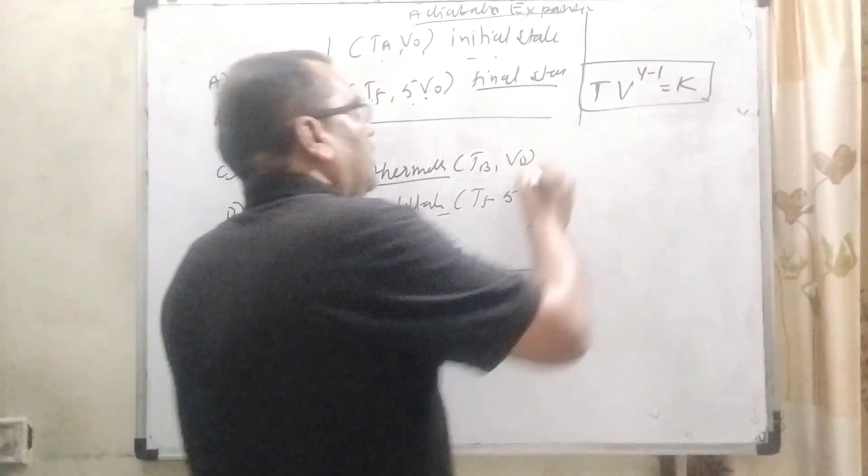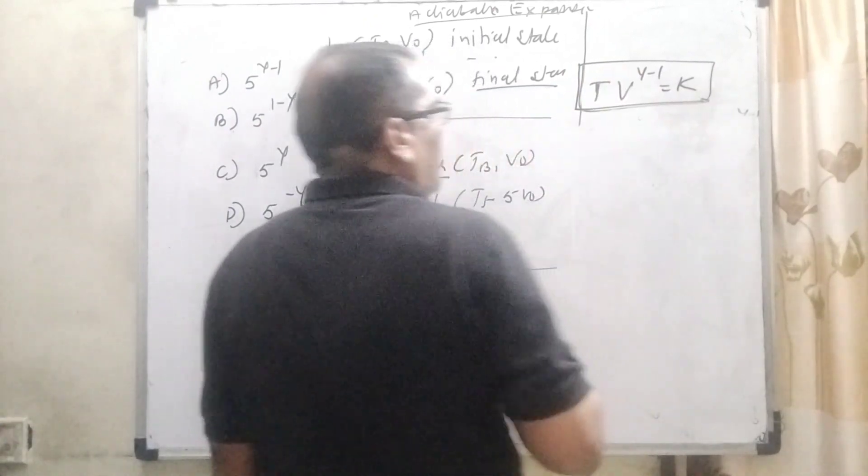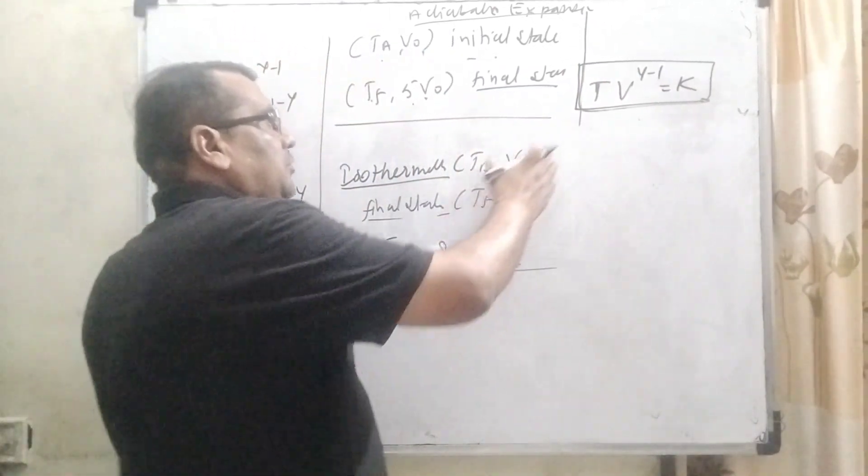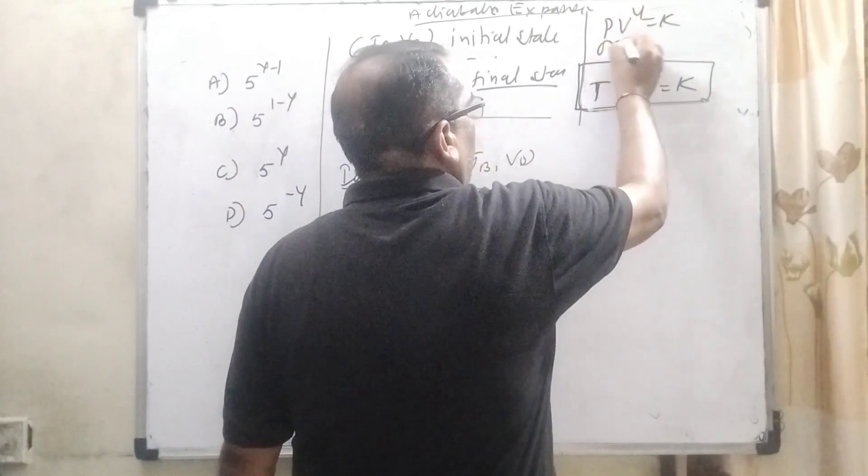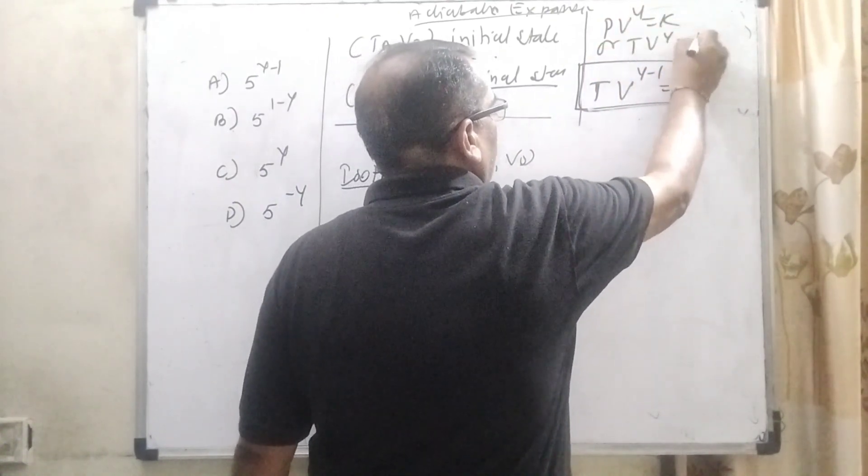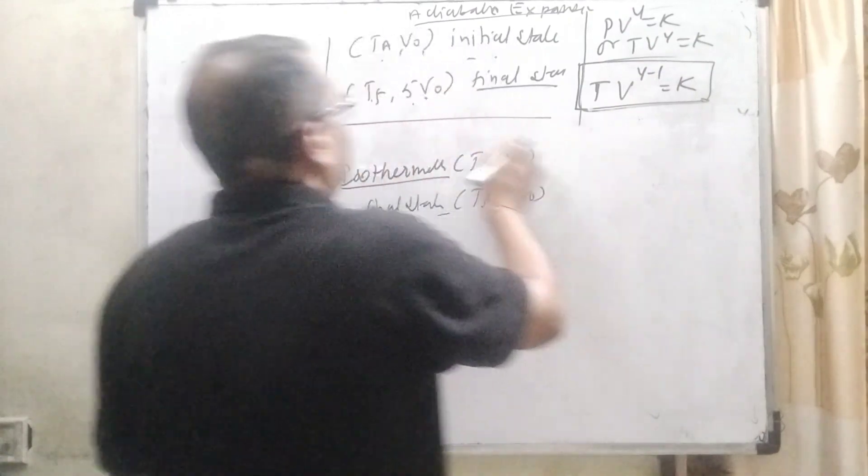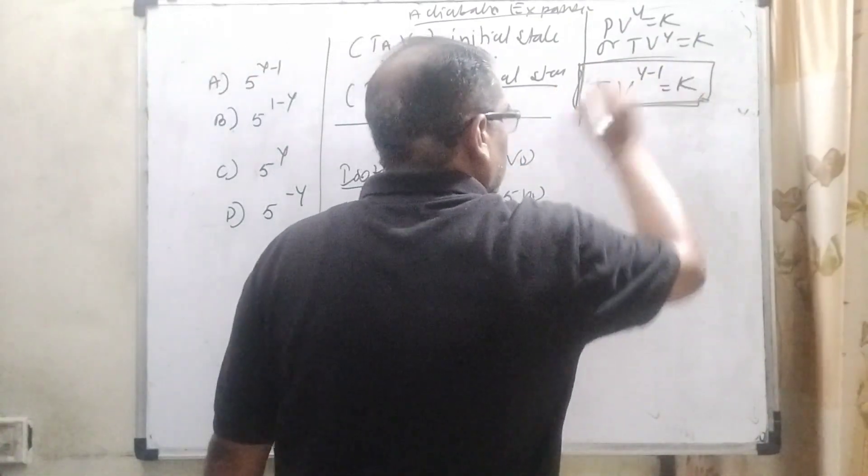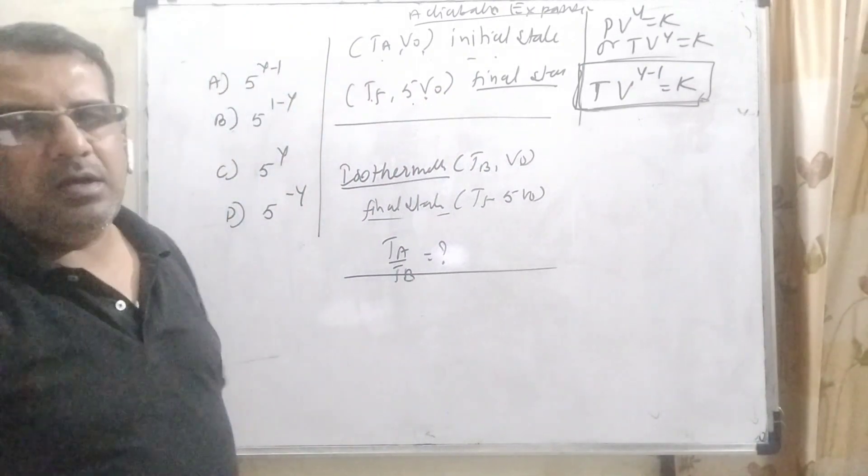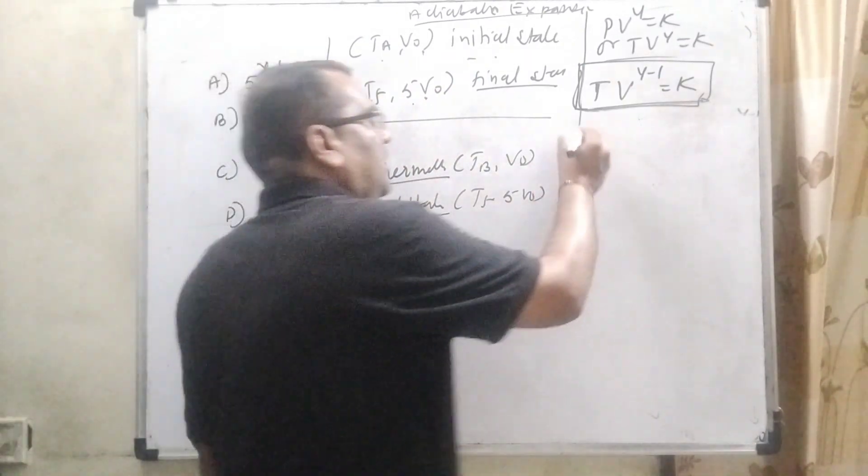Now here, we are well known about the adiabatic process. The formula used is TV raised to the power gamma equal to K. Here we have given the relation between temperature and volume. So therefore, we are using this formula: TV raised to the power (gamma minus 1) equal to K. Here K is constant.